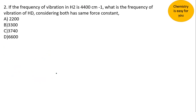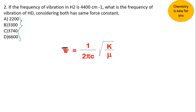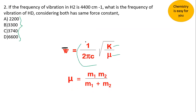The second question: if the frequency of vibration in H2 (hydrogen molecule) is 4400 per centimeter, what is the frequency of vibration of HD — where one hydrogen is replaced by deuterium — considering both have the same force constant? We need to find the vibrational frequency of HD from the known value for H2. The wave number is given as ν̄ = (1/2πc)√(k/μ), where μ is the reduced mass and k is the force constant.